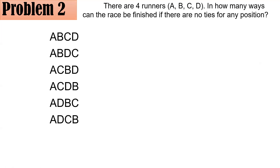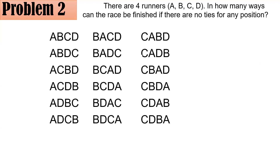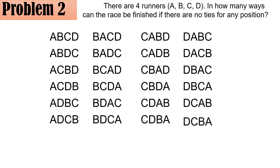So you could also have ACBD, ACDB, ADBC, ADCB. There are six ways that A is the first placer. There are also six ways that B is the first placer, six ways that C is the first placer, and another six ways for D to be the first placer. Here is the full list — all in all, there are four sixes, so four times six equals 24. There are 24 ways.